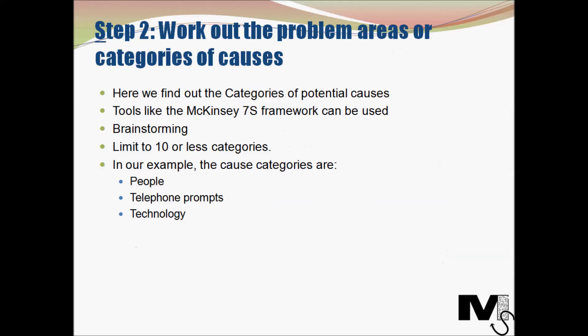Step two is to work out the problem areas or the categories of the causes. Here we find out the factors that directly influence the problem most — these are categories of the causes, not the actual causes. In a complex business environment one will need to use tools like the McKinsey 7S framework to identify possible categories, but in simpler situations brainstorming with people involved in running the process will help identify these cause categories.